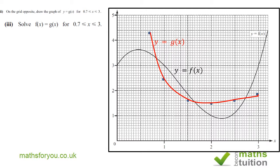Now it says solve f(x) = g(x) for 0.7 ≤ x ≤ 3. We're going to look at the points where both graphs intersect. We've got three points—I expect three points for my answer. There's a point there. At this point I estimate x to be 0.8, at this point I estimate 1.65, and this point I estimate to be 2.75.